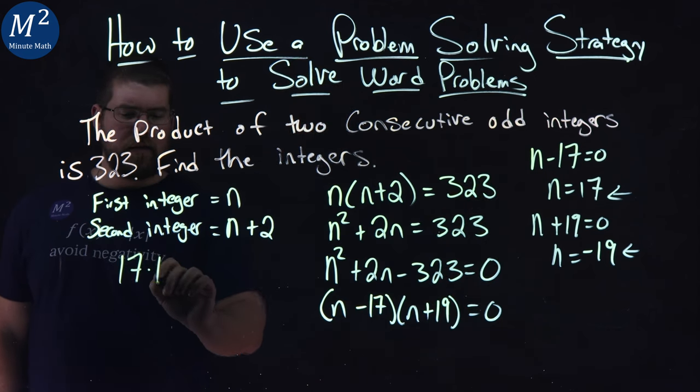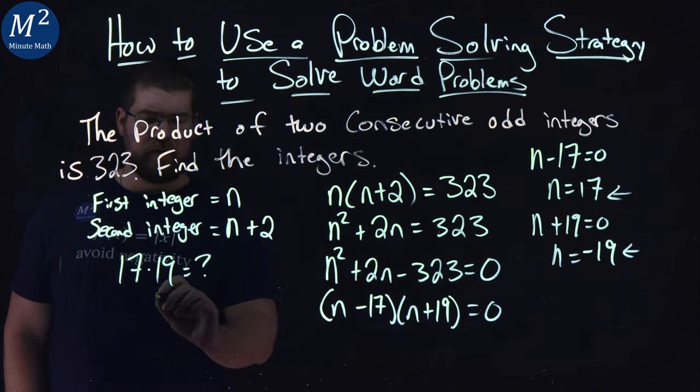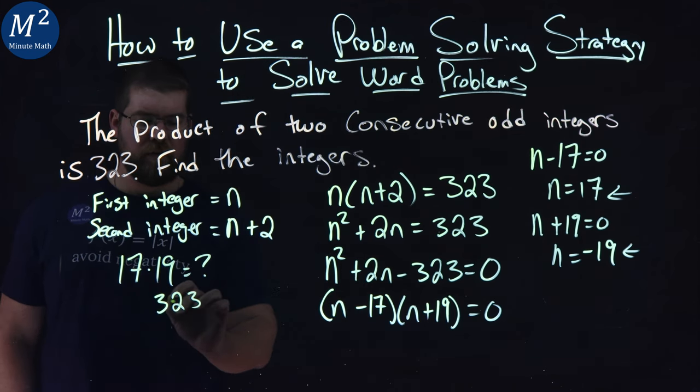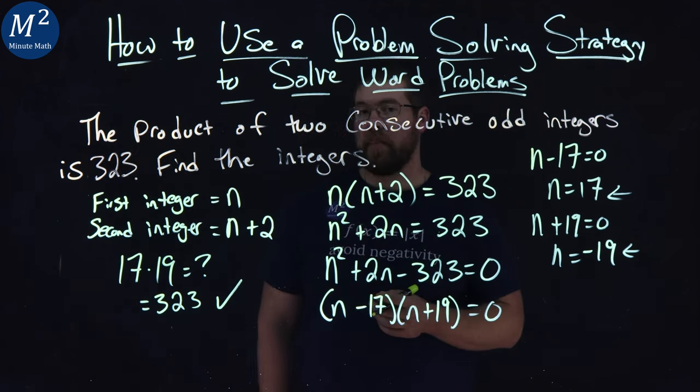So 17 times 19, what does that equal? Well, we kind of already know 17 times 19 is 323. So 17 times 19 works here, it's 323.